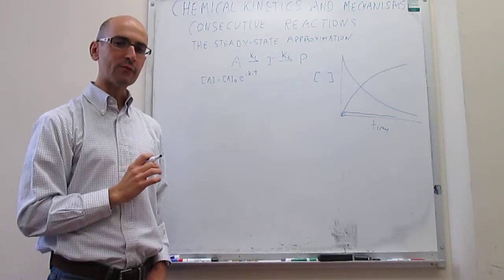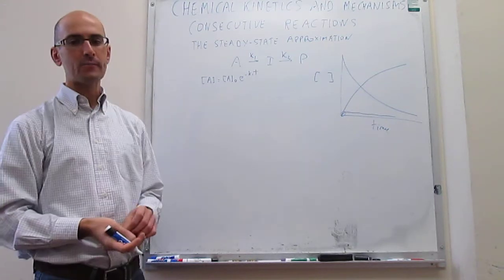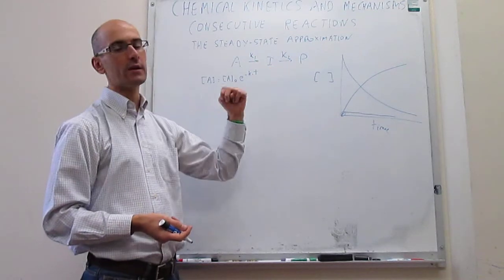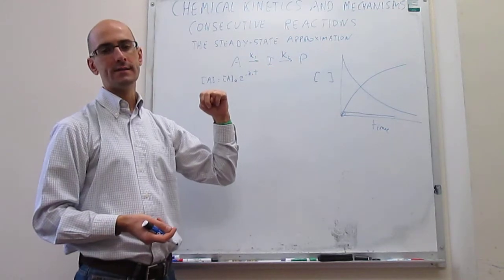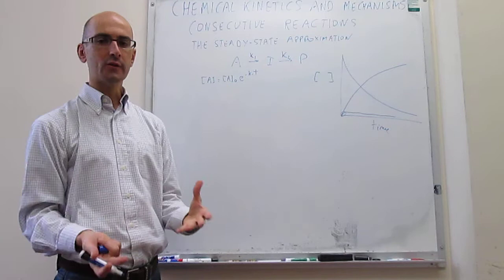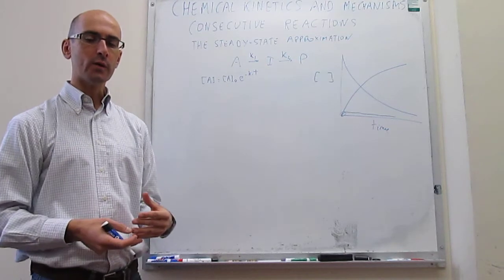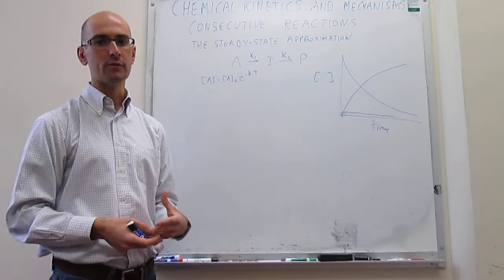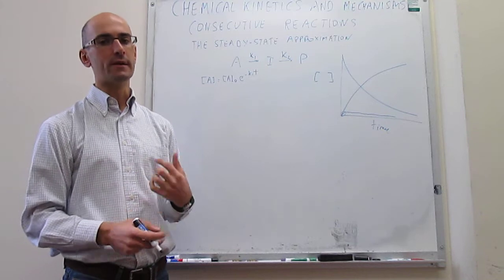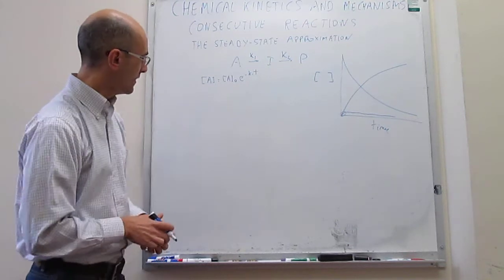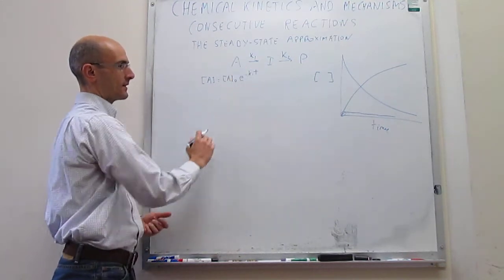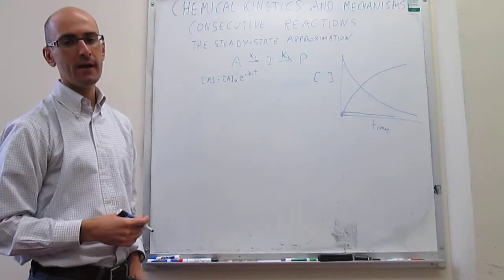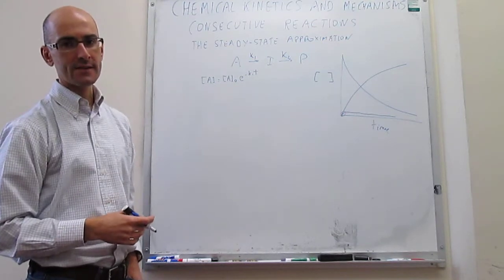This happens more frequently than the rate-limiting step case, in which it's very obvious that one step is faster than the other. The question is how we introduce this steady state approximation for an intermediate into our mechanism. We're going to do this on the consecutive reactions that have served as a benchmark for the last couple of videos.